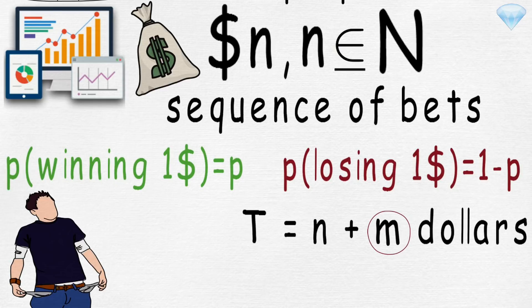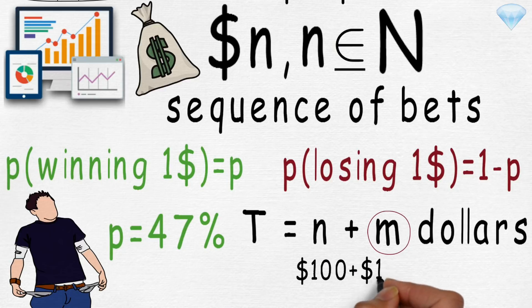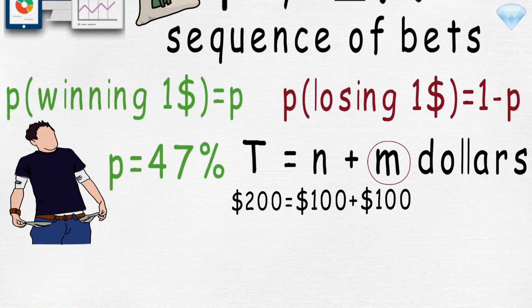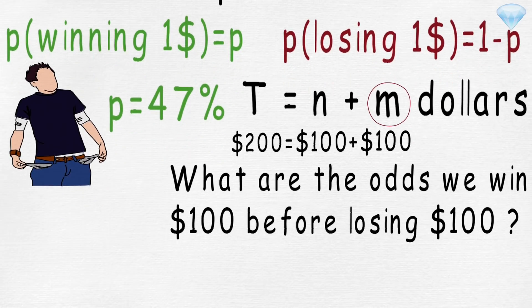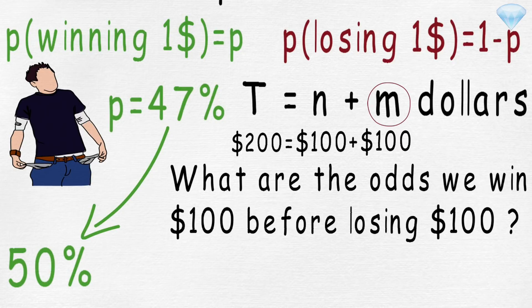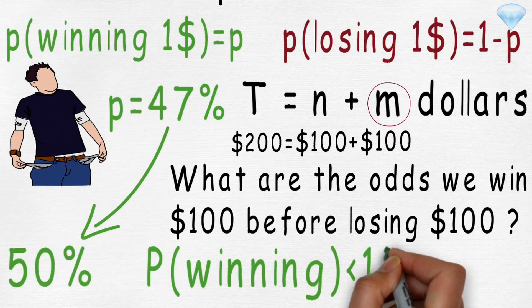For example, let's say that probability of success equals 47%, if n equals 100 dollars and m equals 100 dollars. Then t equals 200 dollars. Now the question is, what are the odds we will win one hundred dollars before we lose one hundred dollars? Most people would think that it's easy, it is 47%, which is equivalent to 50%. Well, the odds are not so bad. However, in effect, we will see that we will win before we lose with probability much less than 1%.